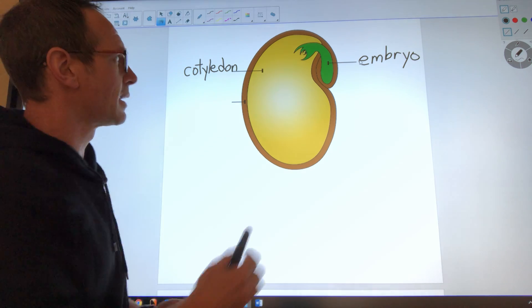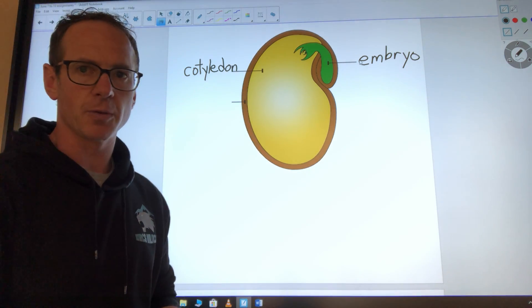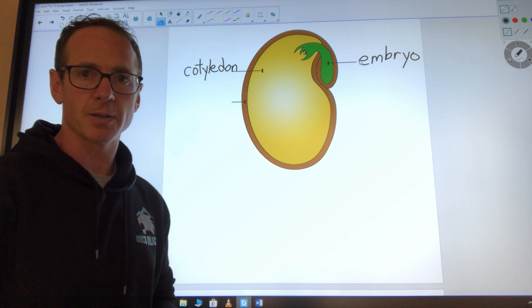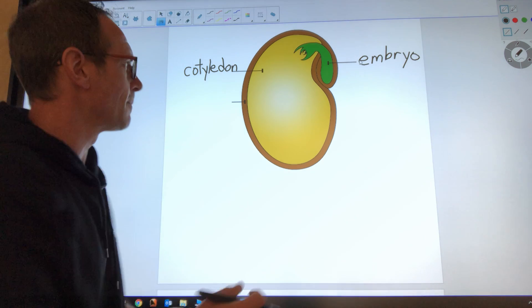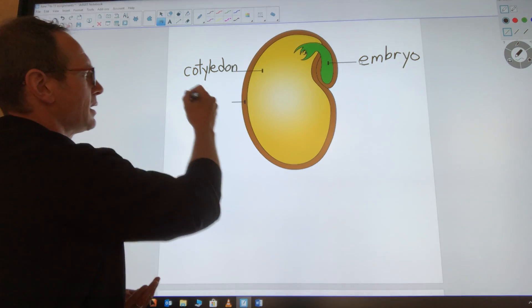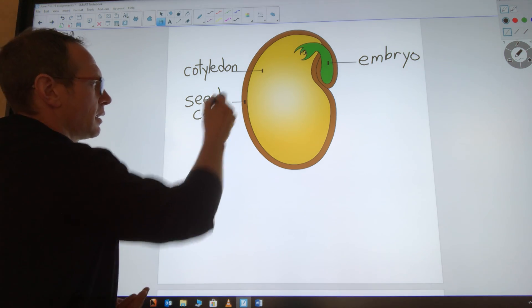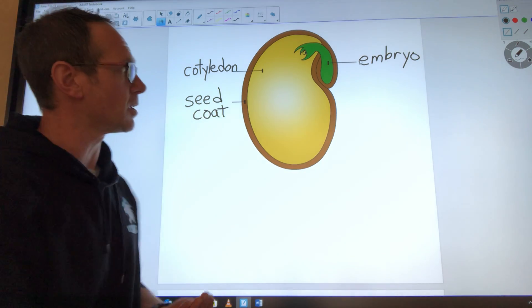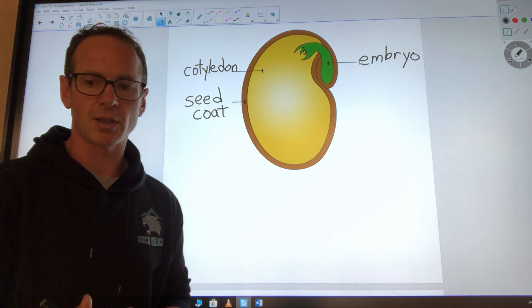Now a seed may sit in nature for months or years before it grows and it needs to be protected. So on the outside of a seed is this thing called the seed coat, and its job is to protect the inside of the seed, to protect the embryo and the cotyledon until it's ready to grow.